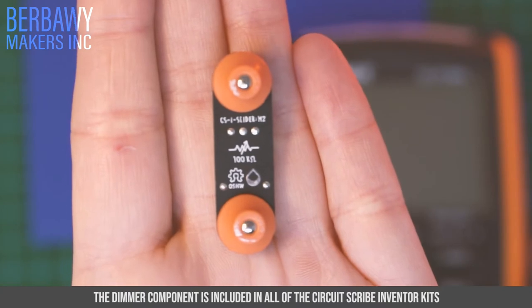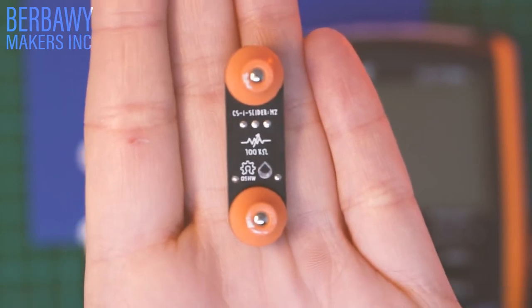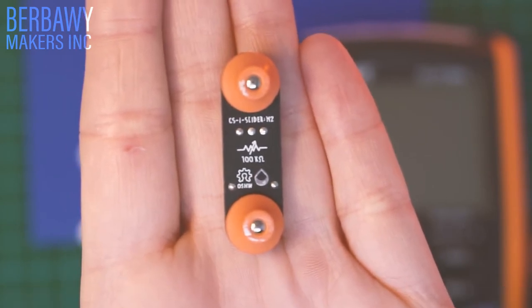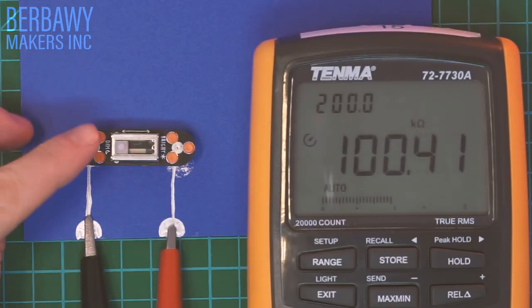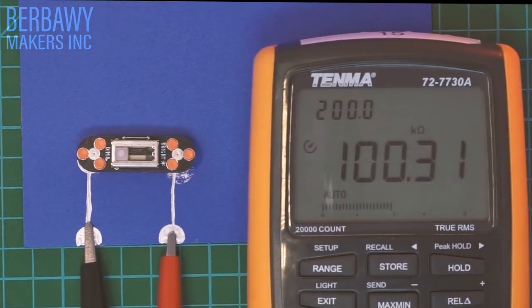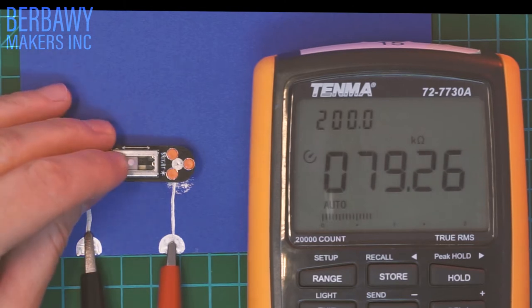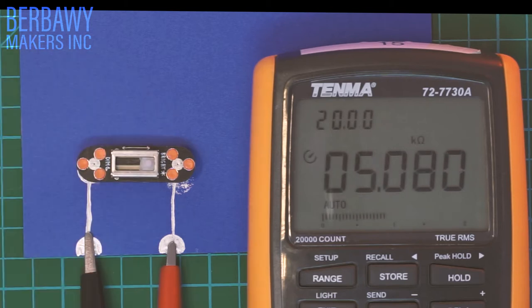If we look at the back of our dimmer component, we can see that the potentiometer is rated for 100 kiloohms. With our dimmer switch set in the dimmest position here, we can see that our multimeter reads 100 kiloohms. As we slide it toward the brighter side, you can see the kiloohm reading decreasing until we're all the way at the brightest side and we're down here around 10, 5, 8 kiloohms.